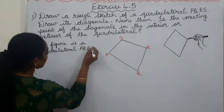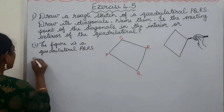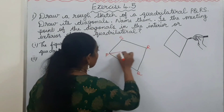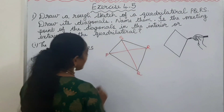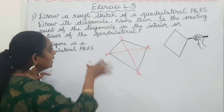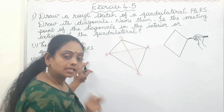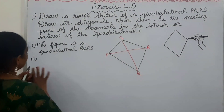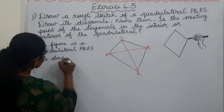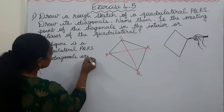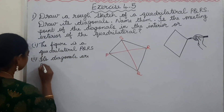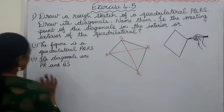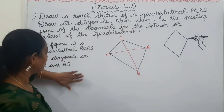Next, draw its diagonals and name them. Diagonals ko draw karke unko name karna hai. So its diagonals are PR and QS. We have drawn the diagonals and named them. In your notes, write down the diagonal names — PR and QS — that is necessary. So its diagonals are PR and QS. That is done.